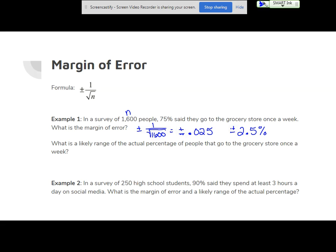So the margin of error is 0.025 or 2.5%. So from that, we can get the likely range of the actual percentage of people. So we take 75% and we subtract 2.5. We take 75% and we add 2.5.